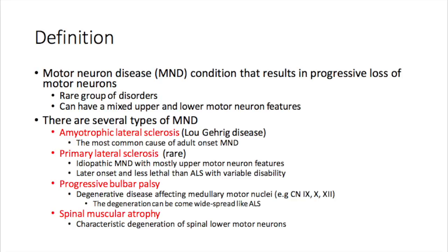We have amyotrophic lateral sclerosis, or Lou Gehrig's disease, and that's the most common cause of adult onset motor neuron disease. You can also have primary lateral sclerosis, which is rare, idiopathic, and predominantly presents with upper motor neuron features. It has a later onset and is less lethal compared to ALS, with variable disability.